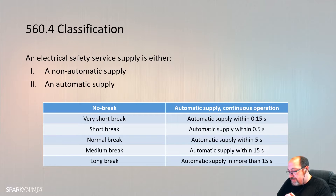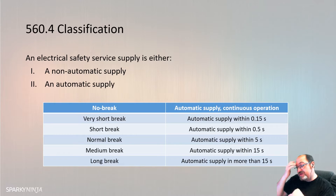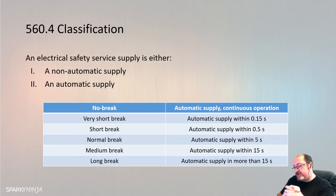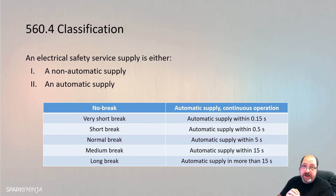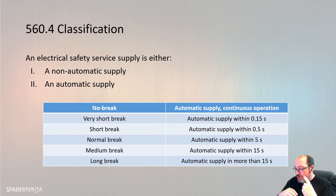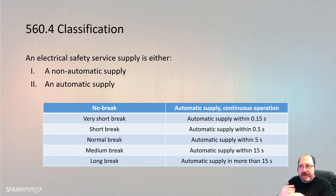Regarding battery power under 560.6.10 - batteries shall be of vented or valve-regulated maintenance-free type and shall be of heavy-duty industrial design. The note states the minimum design life at 20 degrees should be 10 years. For low-power supply sources with a 500-watt three-hour duration or a 1500-watt one-hour duration, the life is five years at 20 degrees - these are more common and the type you'd find in emergency lighting.